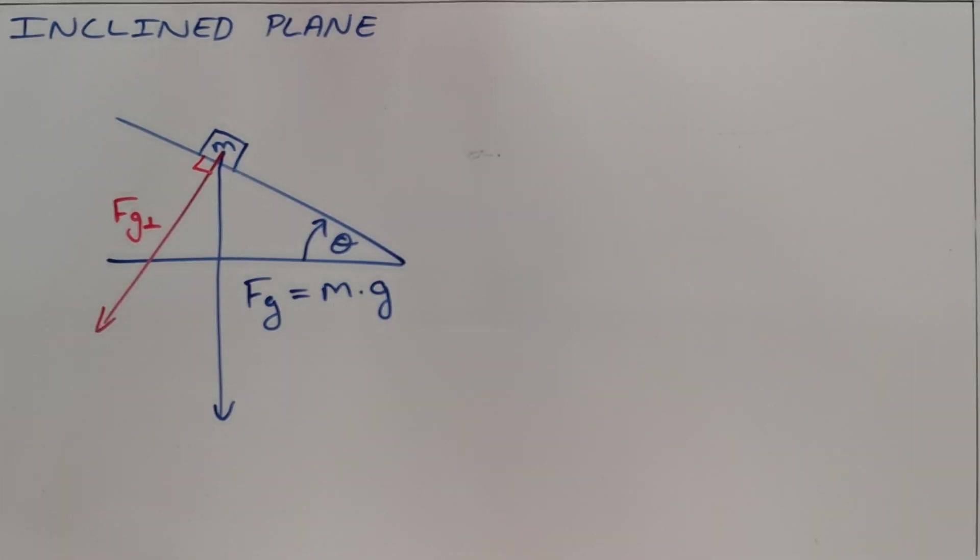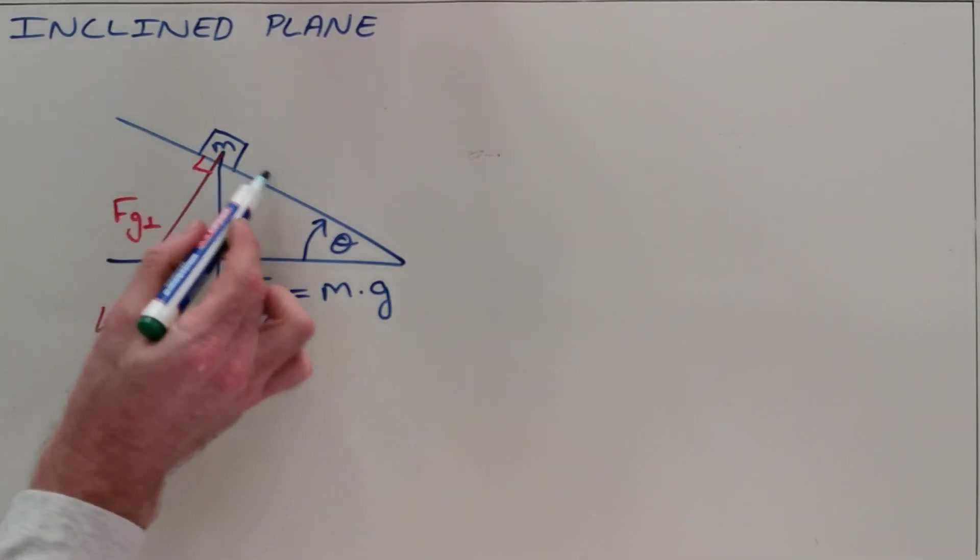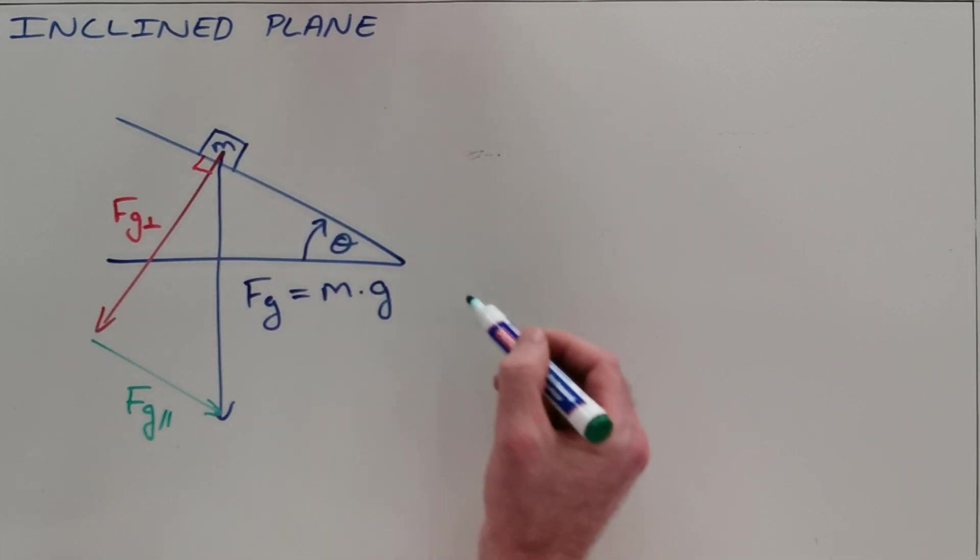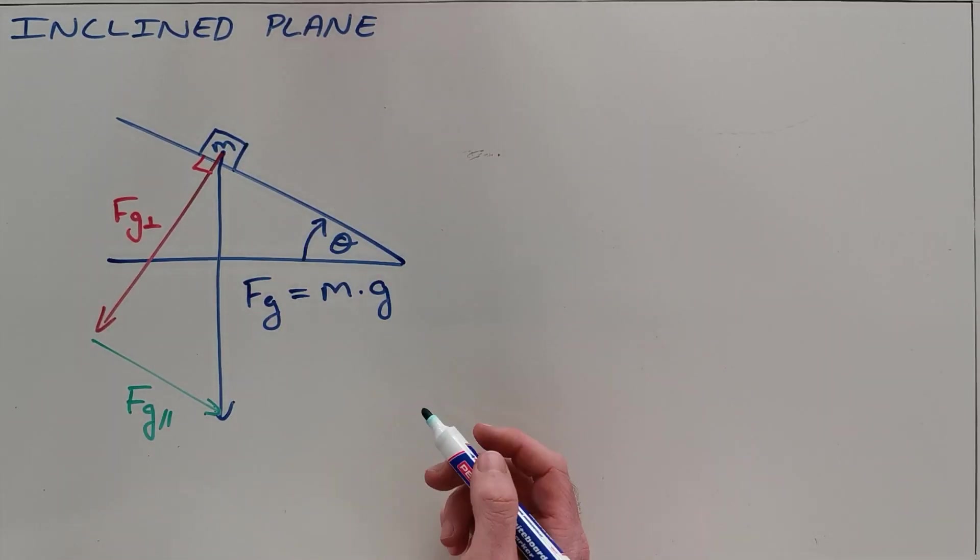The second component is the component of gravity that is pulling this object down the slope and we call that Fg parallel. The reason for that is that this component acts parallel to the slope, in this case downwards.